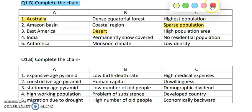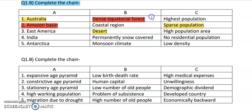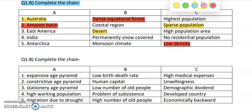Next is Amazon basin. Amazon basin is nothing but equatorial forest. Amazon basin and Congo basin both come near the equator, so it has a dense equatorial forest. And over there you can see a low density of population — the lowest population is found here.